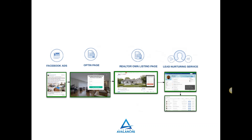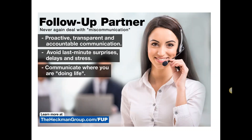In the done-for-you Listing Avalanche system, we create a Facebook ad for you — you don't have to do it or figure it out. We use the psychology of Facebook with ads that are already split-tested every way imaginable to make sure they actually convert. This brings people to an opt-in page using a listing page that attracts customers in specific farm areas and neighborhoods.